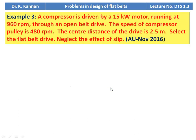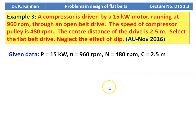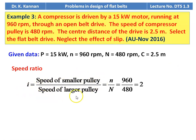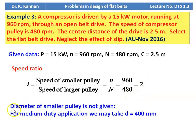Example number 3: A compressor is driven by a 15 kilowatt motor running at 960 RPM through an open belt drive. The speed of the compressor pulley is 480 RPM, the center distance is 2.5 meter. Select the flat belt drive, neglect the effect of slip. From November 2016 question paper. Given: power = 15 kW; motor speed n = 960 RPM; compressor pulley speed N = 480 RPM; center distance C = 2.5 m. Speed ratio I = n / N = 960 / 480 = 2. No pulley diameter is mentioned.